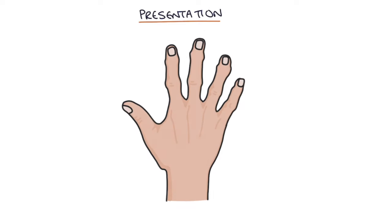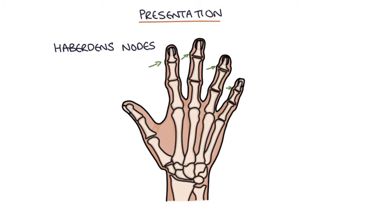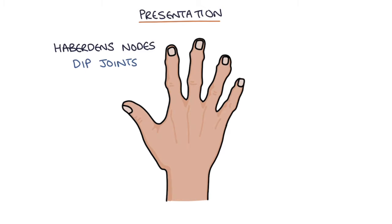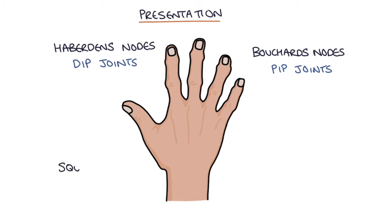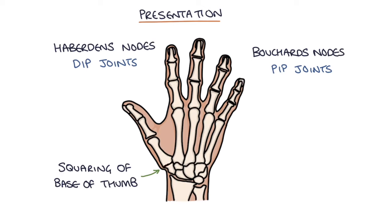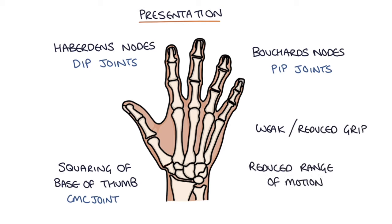Let's talk about some of the signs you might see when examining the hands of somebody with osteoarthritis. The first is Heberden's nodes, which occur in the DIP joints — the distal interphalangeal joints — at the end of the fingers. The next is Bouchard's nodes, which are seen in the proximal interphalangeal joints, the second joint from the end of the finger. You can see squaring at the base of the thumb at the CMC joint, along with a weak or reduced grip and reduced range of motion in the fingers.